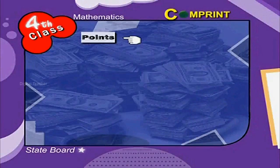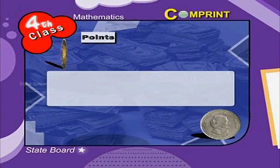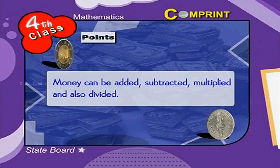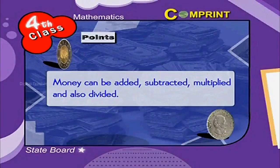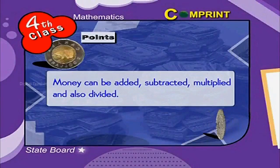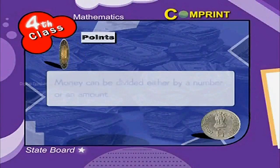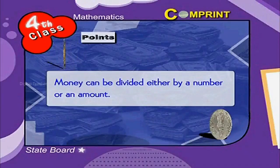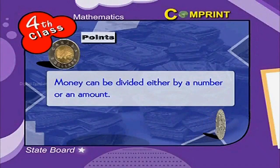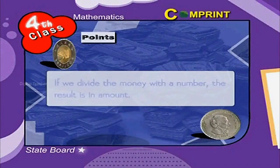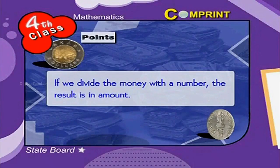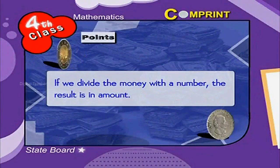Points to remember: Money can be added, subtracted, multiplied, and also divided. Money can be divided either by a number or an amount. If we divide the money by a number, the result is in amount.